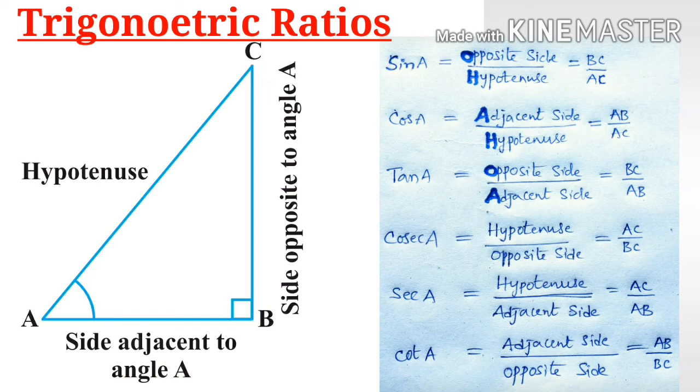Different trigonometric ratios are defined as: sin A equals opposite side by hypotenuse, cos A equals adjacent side by hypotenuse, tan A equals opposite side by adjacent. And cosecant A, secant A, and cot A are defined as well.